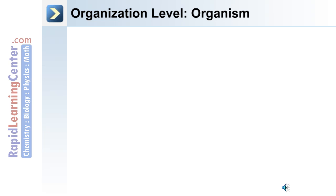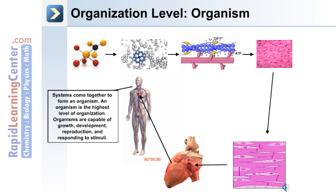Finally, the highest level of organization is the organism. Systems come together to form an organism. Organisms are capable of growth, development, reproduction, and responding to stimuli in their environment.